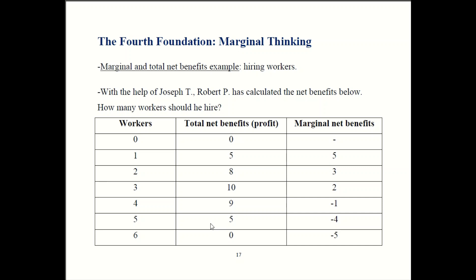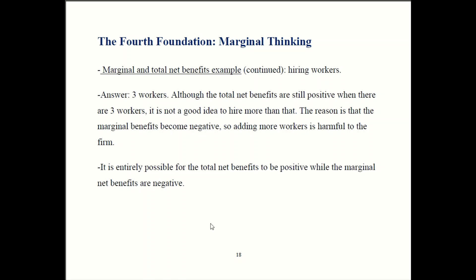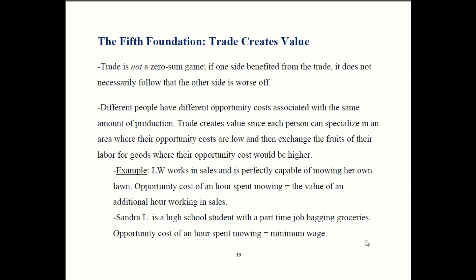Don't conflate total and marginal. You can have too much of a good thing, and saying something is good is not equivalent to saying you need more of it. So that wraps up our fourth foundation on marginal thinking. Now we'll look at our fifth and final foundation: trade creates value. I mentioned at the beginning of the chapter that I don't really think this should be a separate foundation because it can really be derived from the other four, but we'll follow the textbook and treat it as a separate foundation.